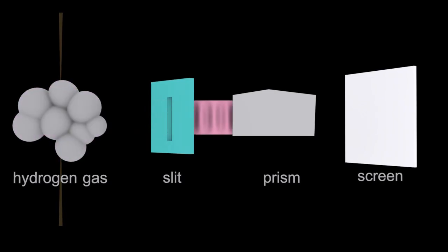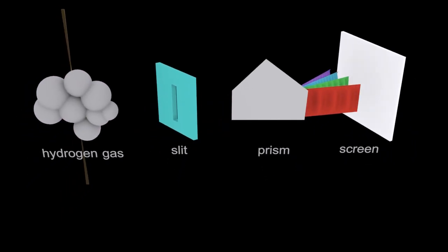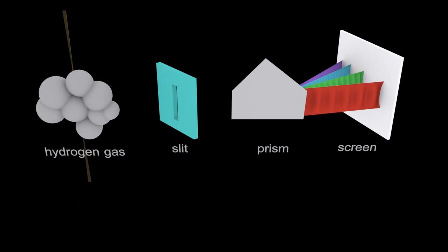It will release light, passes through a slit, refracted through a prism, and hits a screen leaving the line spectrum behind.